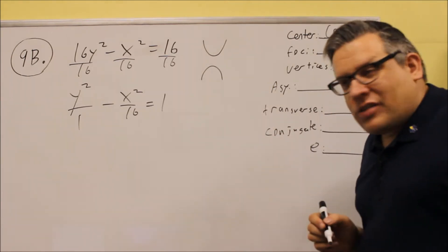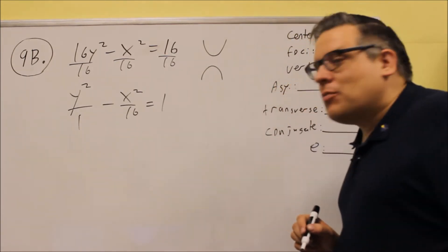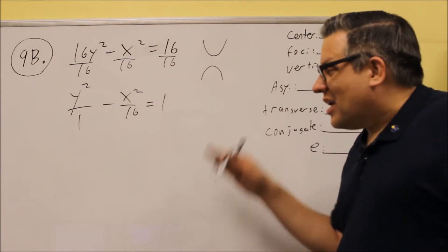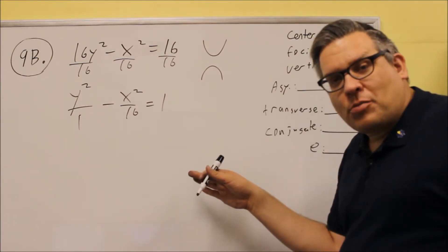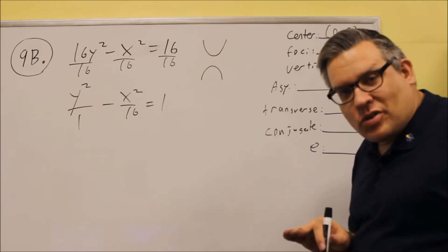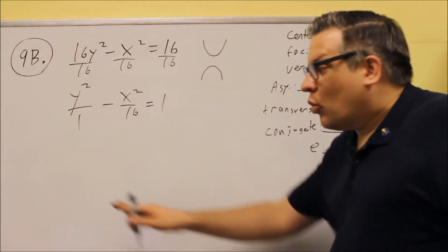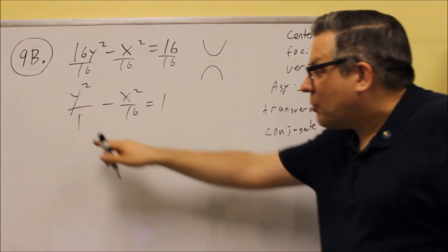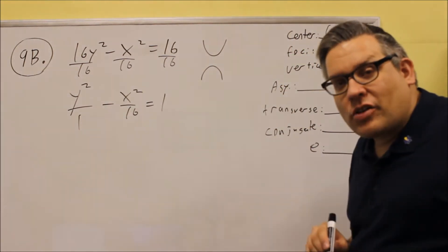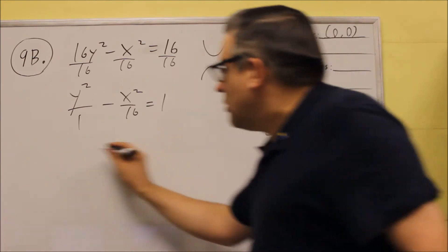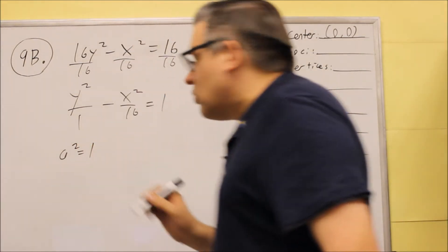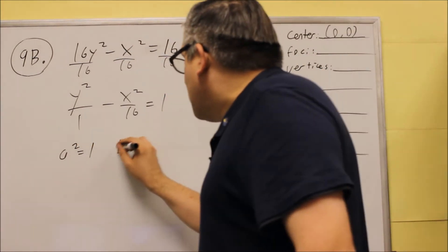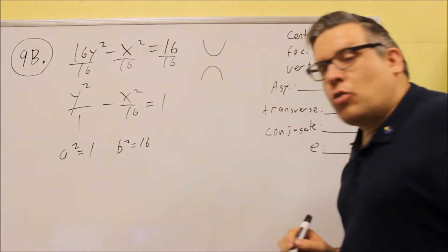Now, what about the a and the b value? For hyperbolas, it's not the larger number is always a. That's for ellipses. For hyperbola, whatever physically comes first in front of the minus sign, whatever number is in front, that's automatically a squared. So, a squared on this problem equals 1, and b squared equals 16.